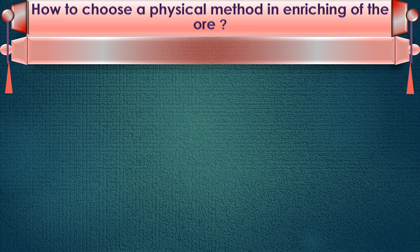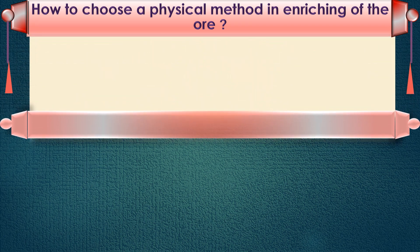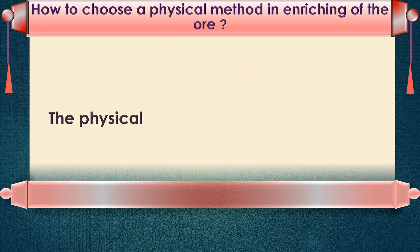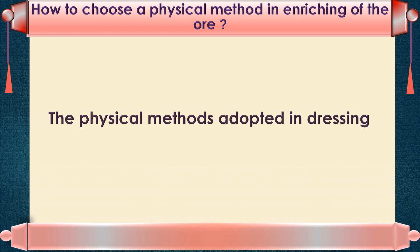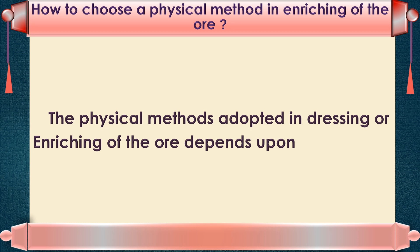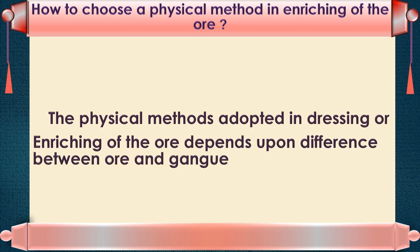How do you choose a physical method in enriching of the ore? The physical methods adopted in dressing or enriching of the ore depend upon the difference between ore and gangue. The physical methods are hand-picking, washing, froth flotation, and magnetic separation.